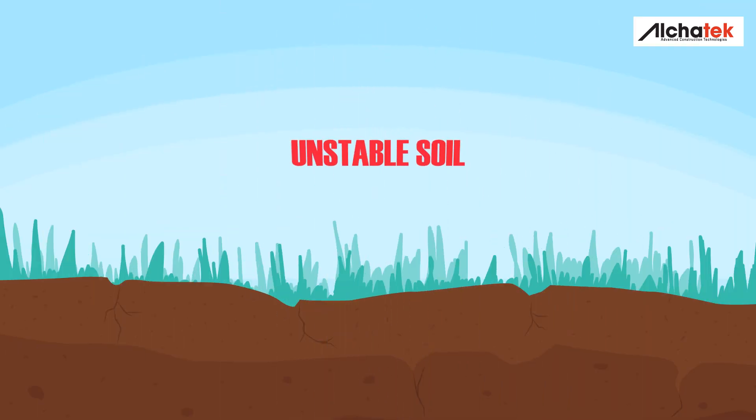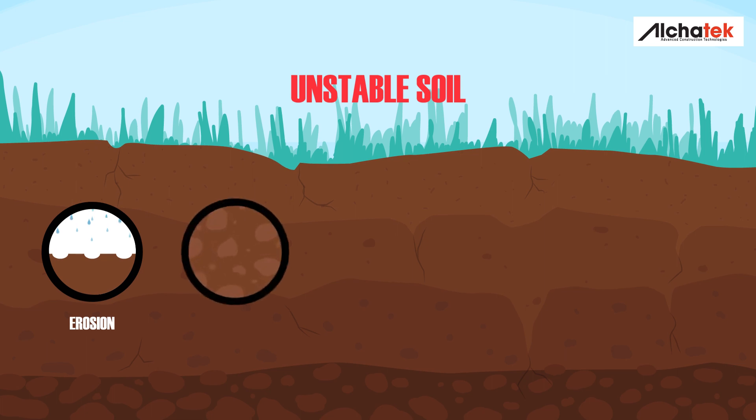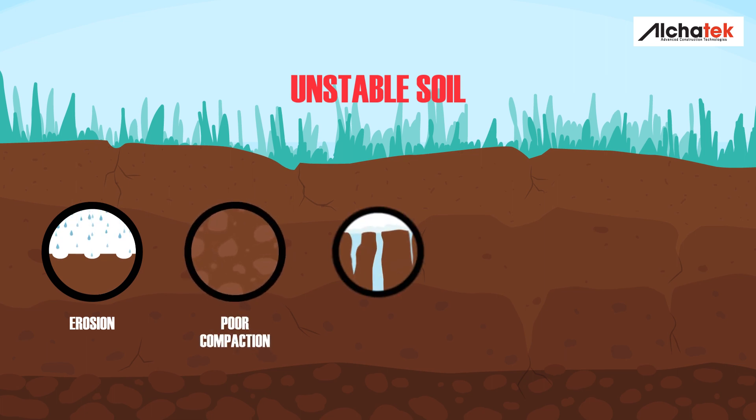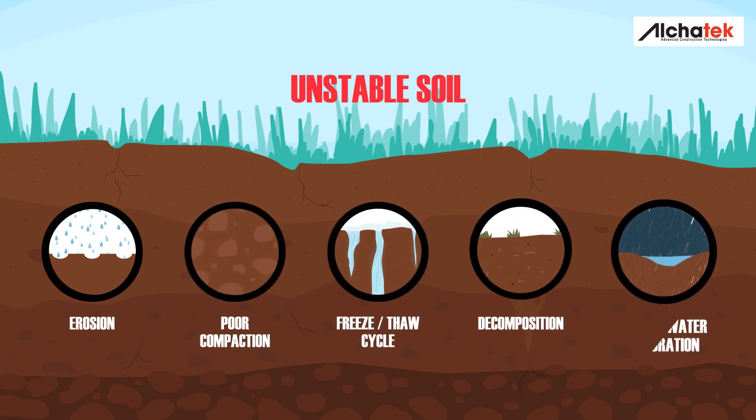Unstable soil can be caused by erosion, poor compaction, freeze-thaw cycles, decomposition, and heavy rains.